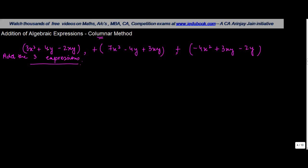Now in columnar method, what you do is first write down any of the expressions. So let's say I write down 3x squared plus 4y minus 2xy.